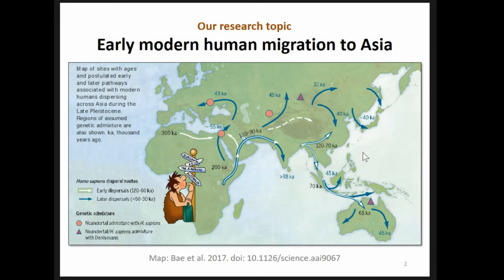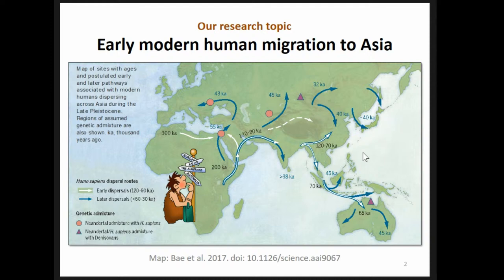Our topic is on early modern human migration, which is a top topic in paleoanthropology and archaeology now. This is a map of sites in Asia and postulated early and later dispersals. There are two waves associated with modern human dispersal across Asia during the late Pleistocene — the first dispersal as old as 120,000 years ago, crossing Arabia to South Asia and Southeast Asia to Oceania, and the second dispersal is the well-known 55–43k event to Europe, Central Asia, Siberia, and East Asia.